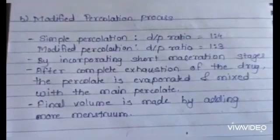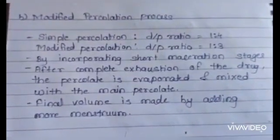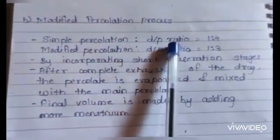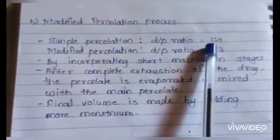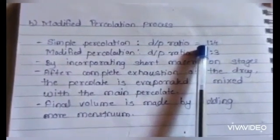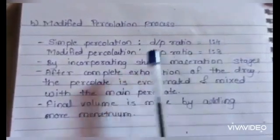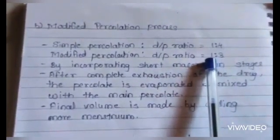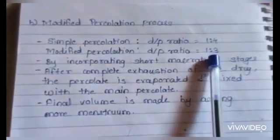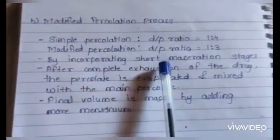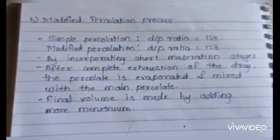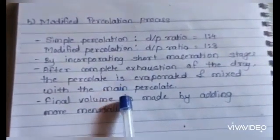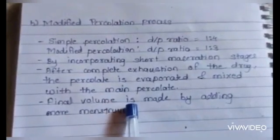The second type is modified percolation, which is a modification of simple percolation. In simple percolation, the drug-to-percolate ratio is 1:4, meaning one part of drug after treating with solvent yields four parts of percolate. In modified percolation, the drug-to-percolate ratio is 1:3, meaning one part of drug yields three parts of percolate. This modification is achieved by incorporating short maceration stages in the simple percolation process. After complete exhaustion of the drug, the percolate is evaporated and mixed with the main percolate, and the final volume is made up by adding more menstruum.